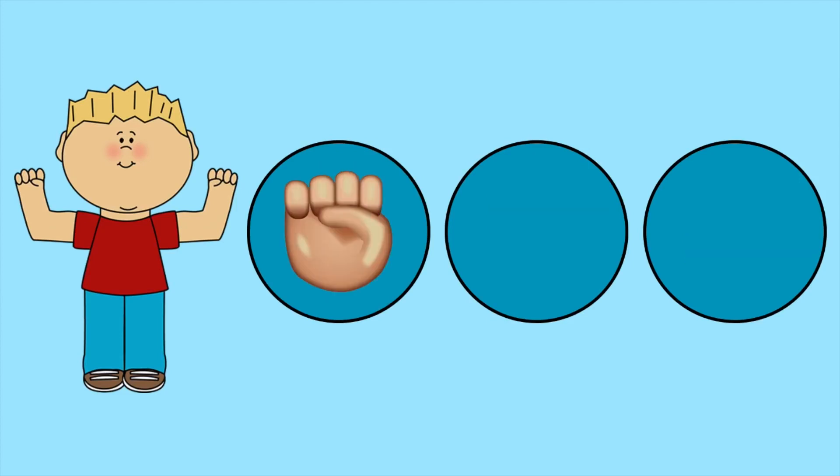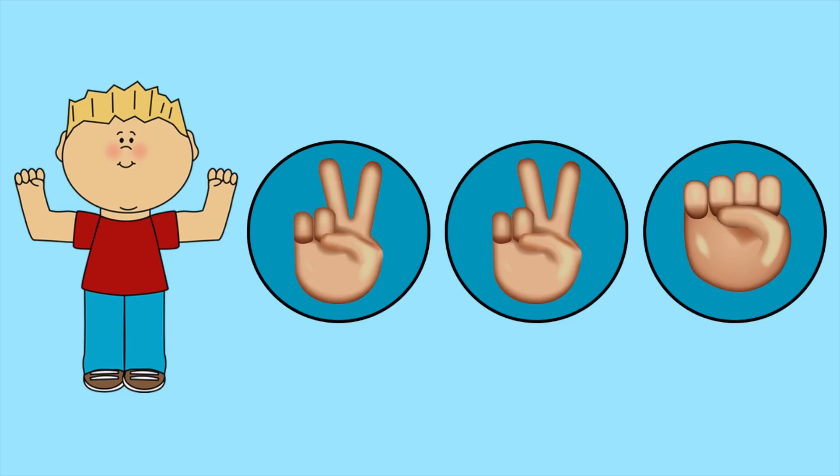If your opponent has repeated the same gesture twice in a row, he is unlikely to repeat it a third time. Most likely, he will make the exact opposite gesture. That is, if the first time he showed a stone, the third time he will show paper. If the first time it was scissors, the third time it will be a stone.